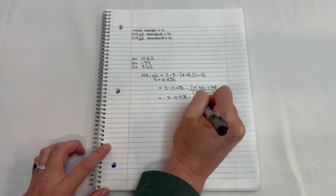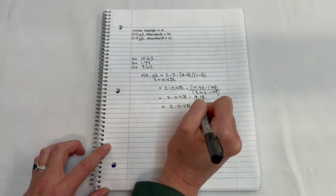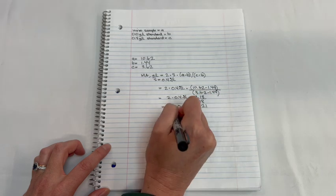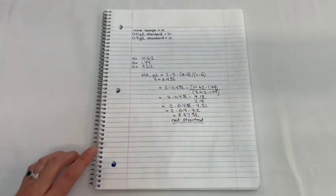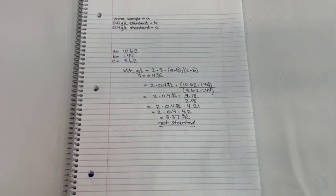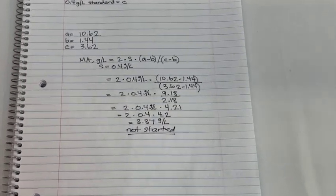After calculating out our value, we can then reference the table provided in the manual to determine the status of MLF completion in our wine sample. Our sample has 3.37 grams per liter malic acid, so our sample has not started MLF.